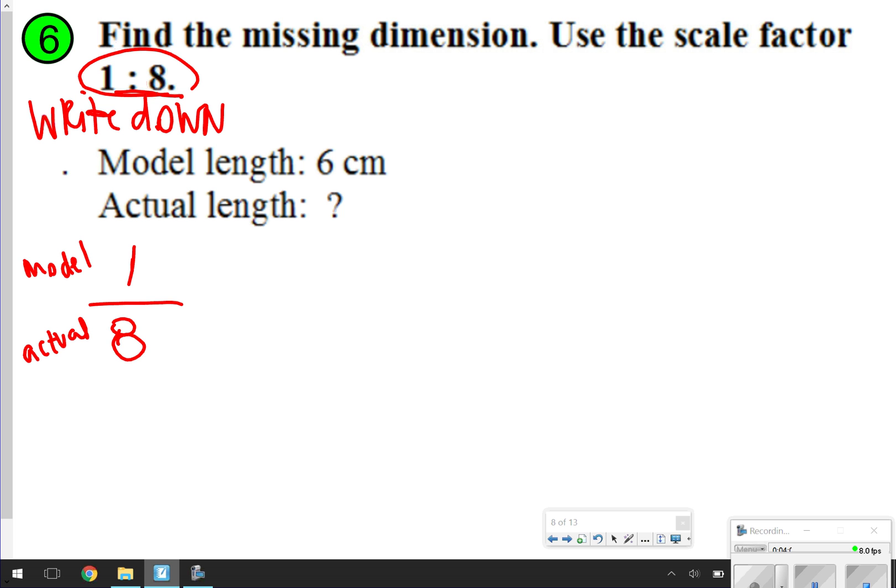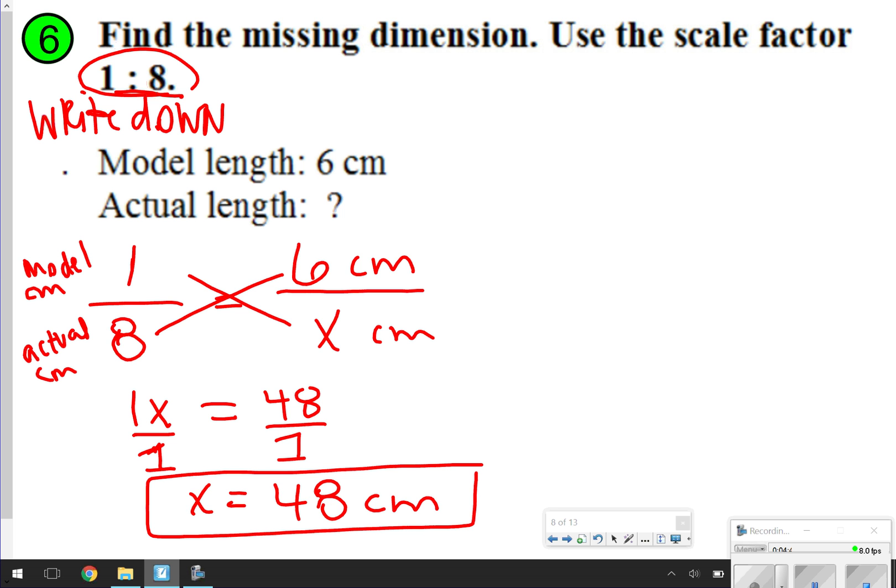So I know the model is going to be written in centimeters. Actual probably would be maybe actual centimeters. The model length is given as 6 centimeters, so 6 centimeters is equal to how many actual centimeters? Again, cross-multiplying to solve here, 1 times x is 1x, 8 times 6 is 48, and then divide both sides by 1, x is equal to 48 centimeters. So that one did not have any units with it, but you still solve it the same way.